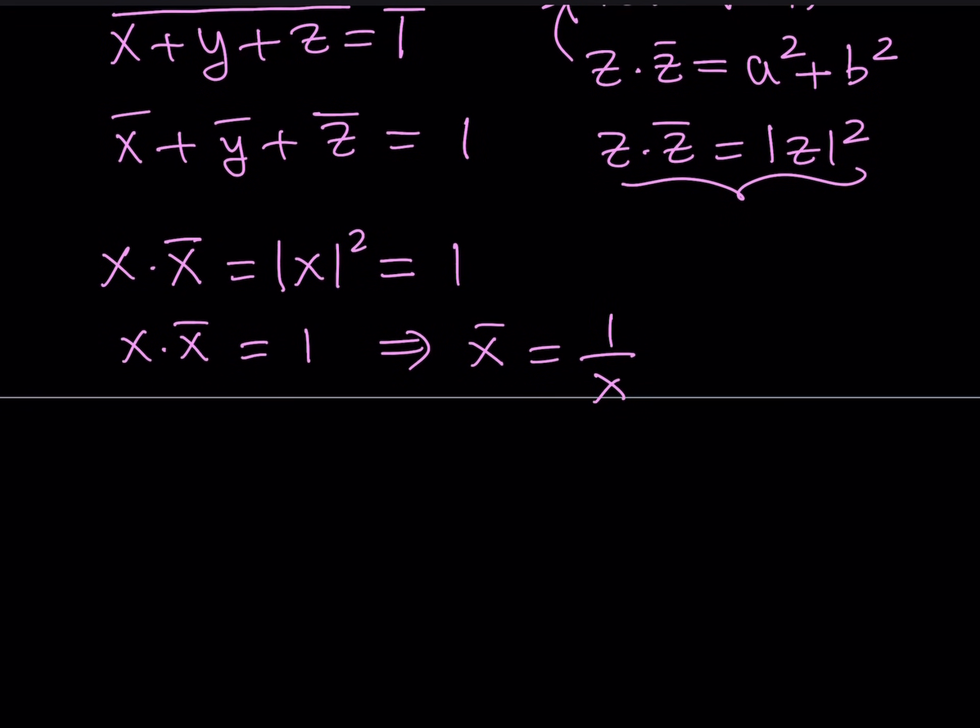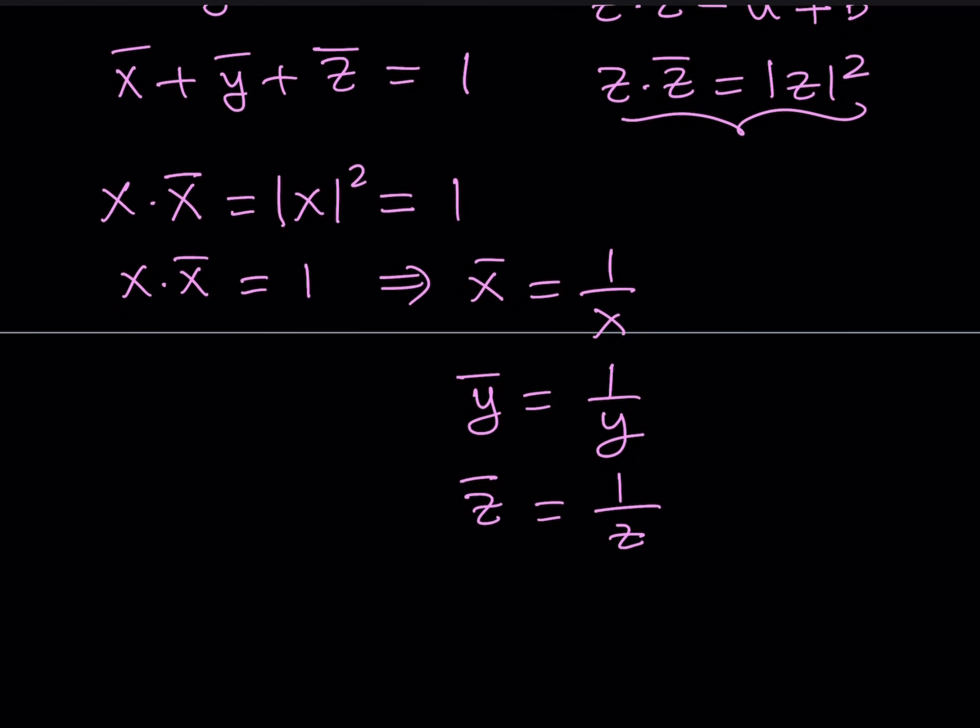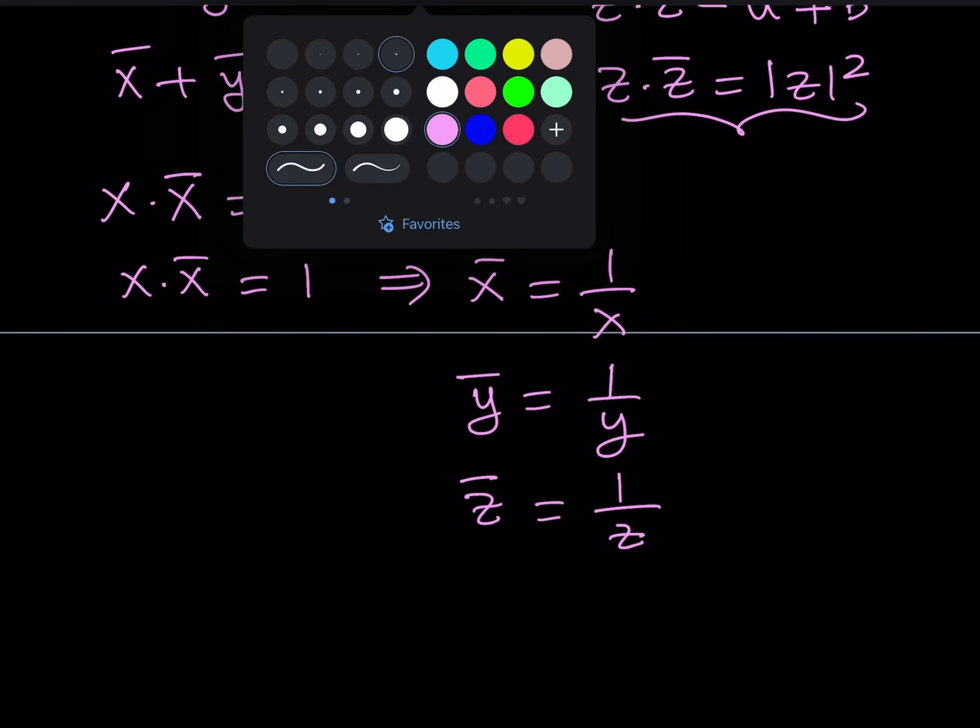And of course, you can say the same thing for Y and the same thing for Z. The conjugate of Y can be written as 1 over Y. And the conjugate of Z can also be written as 1 over Z. So we have these identities where the conjugate is equal to the reciprocal because their product equals 1. So what we can do is we can go ahead and put this together.